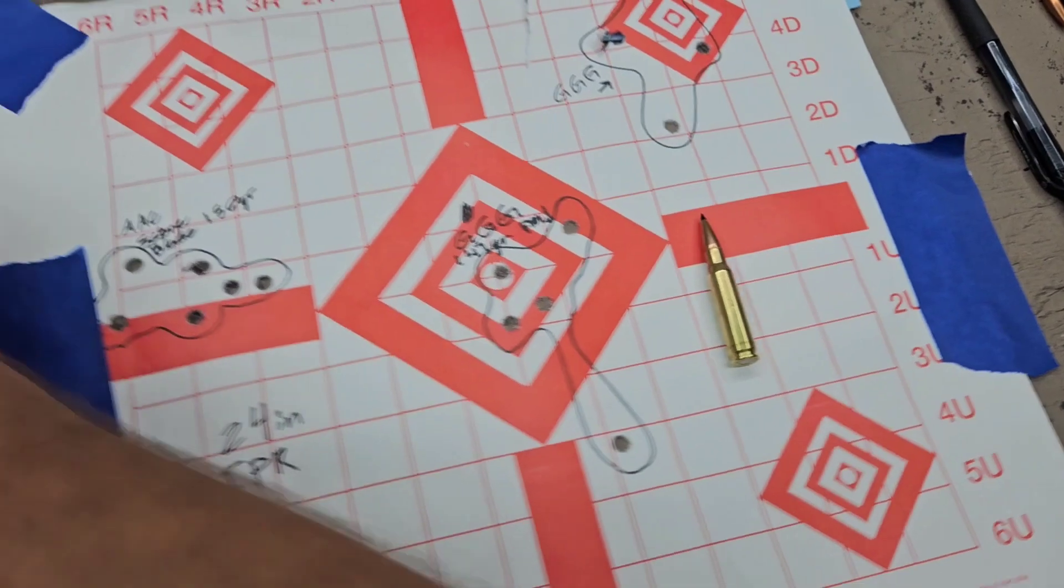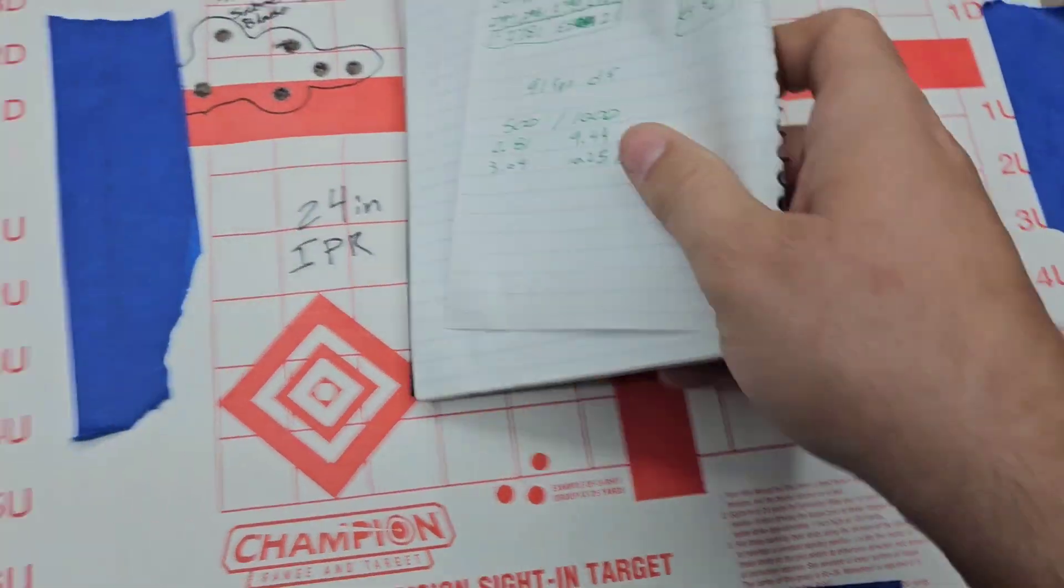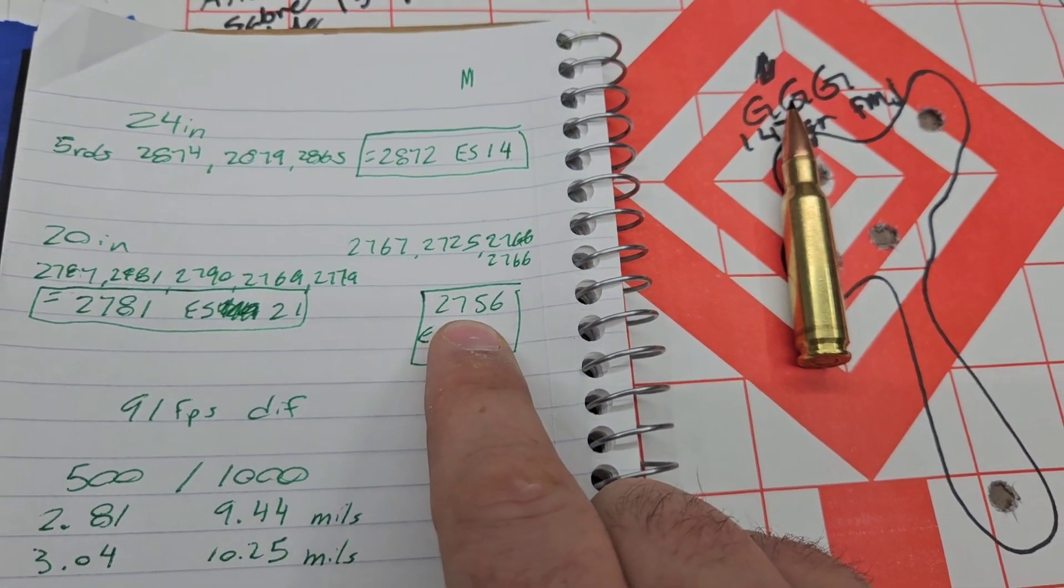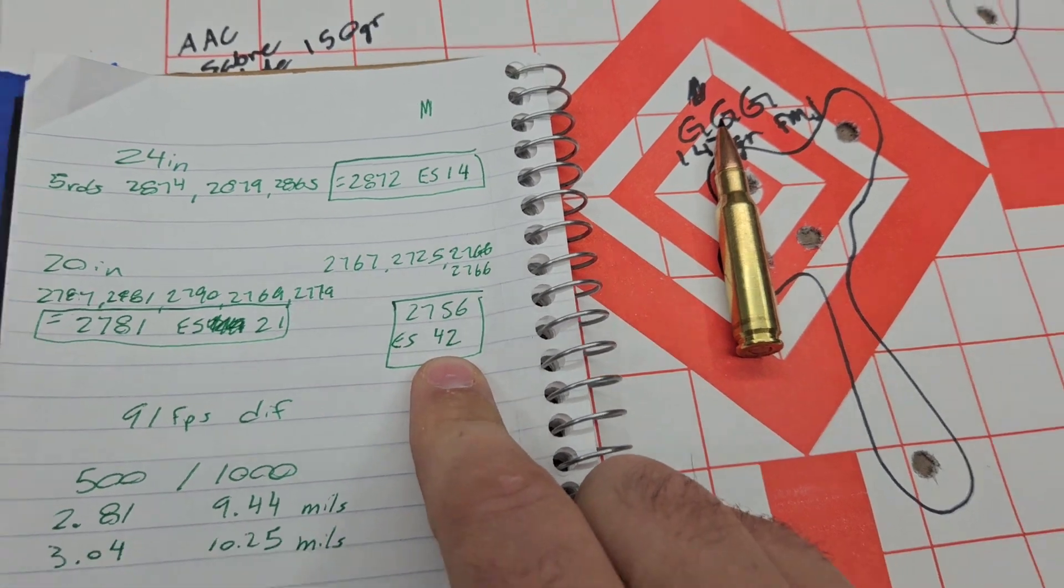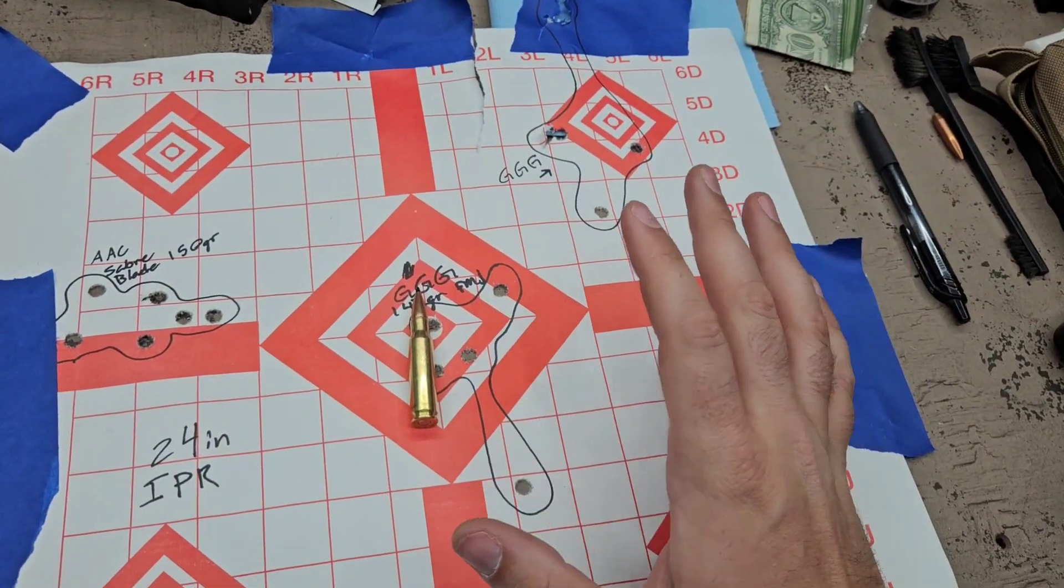I crunched the numbers on that. Out of the 20-inch gun, out of the 20-inch barrel, we're looking at 2756 with an extreme spread of 42 feet per second. So all in all, very inaccurate ammo.